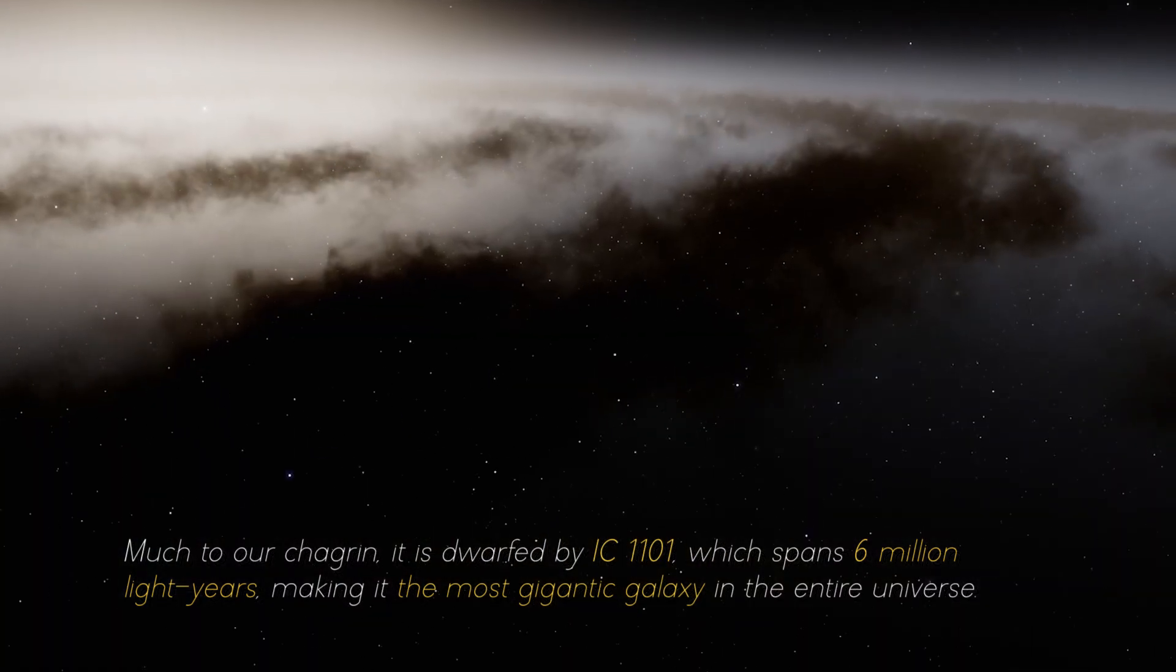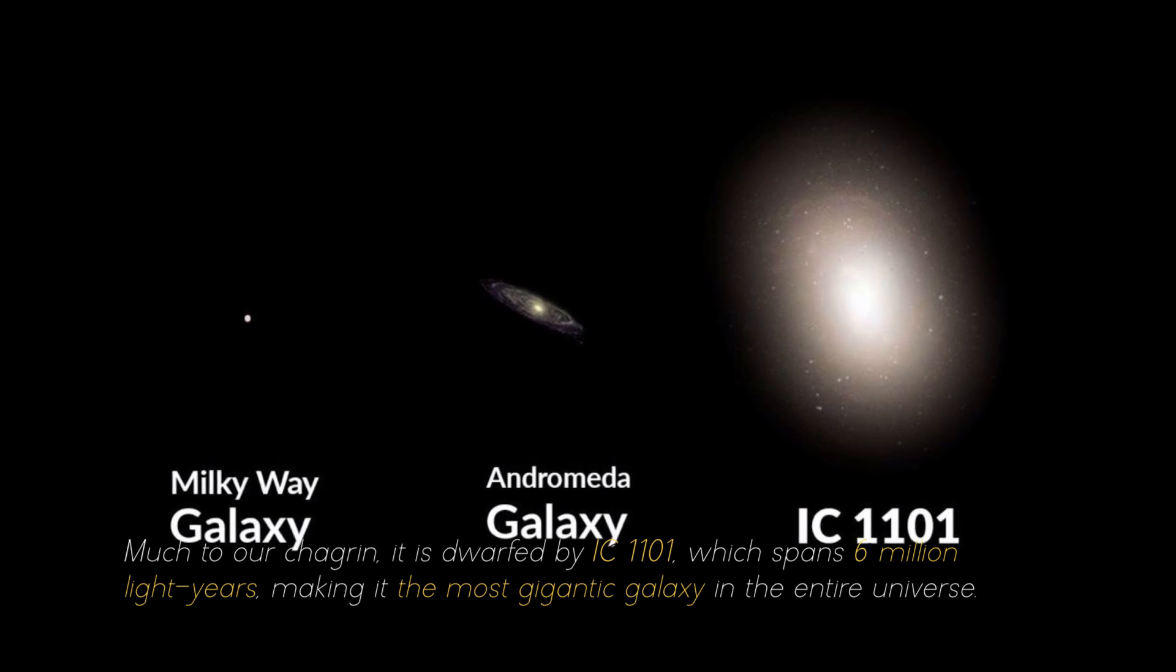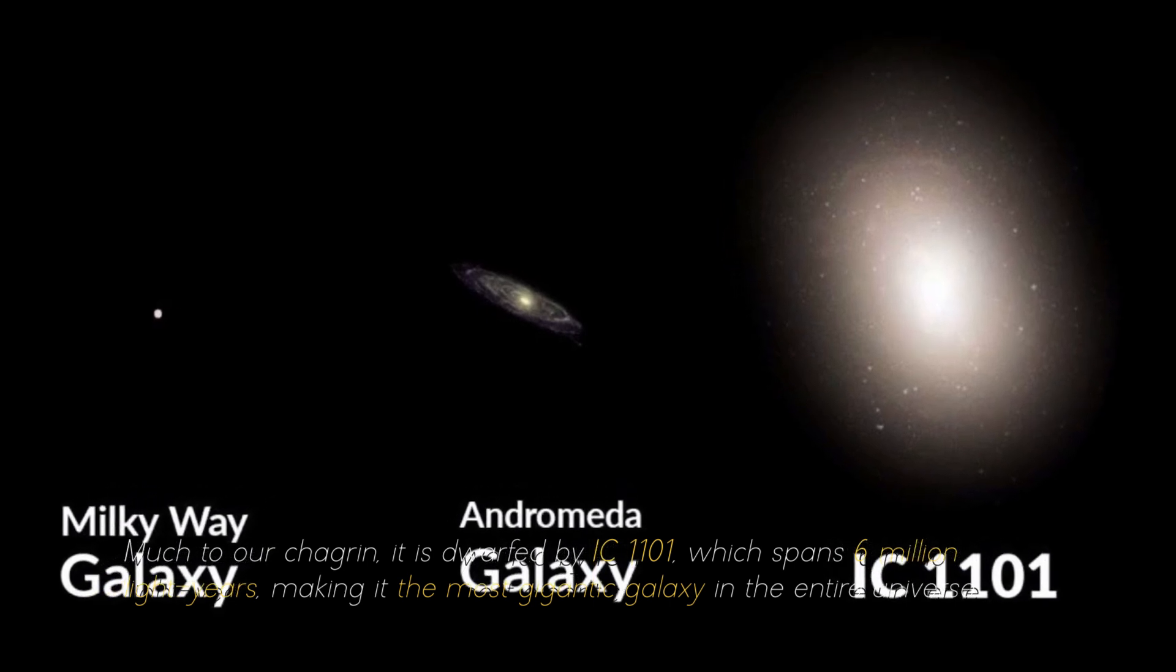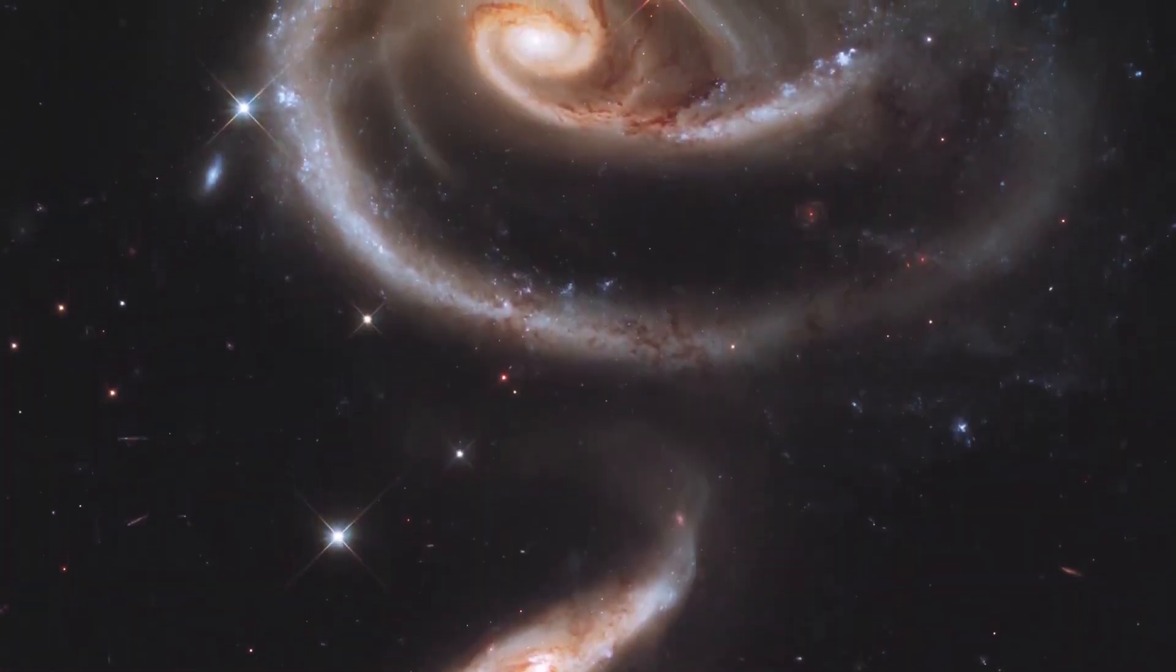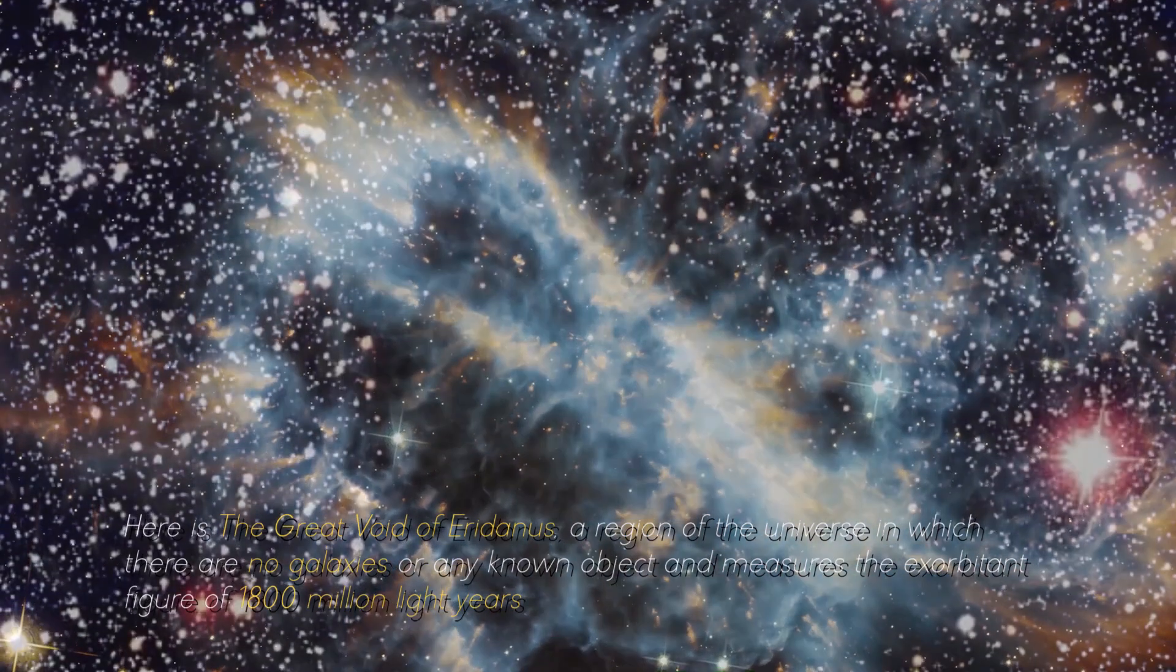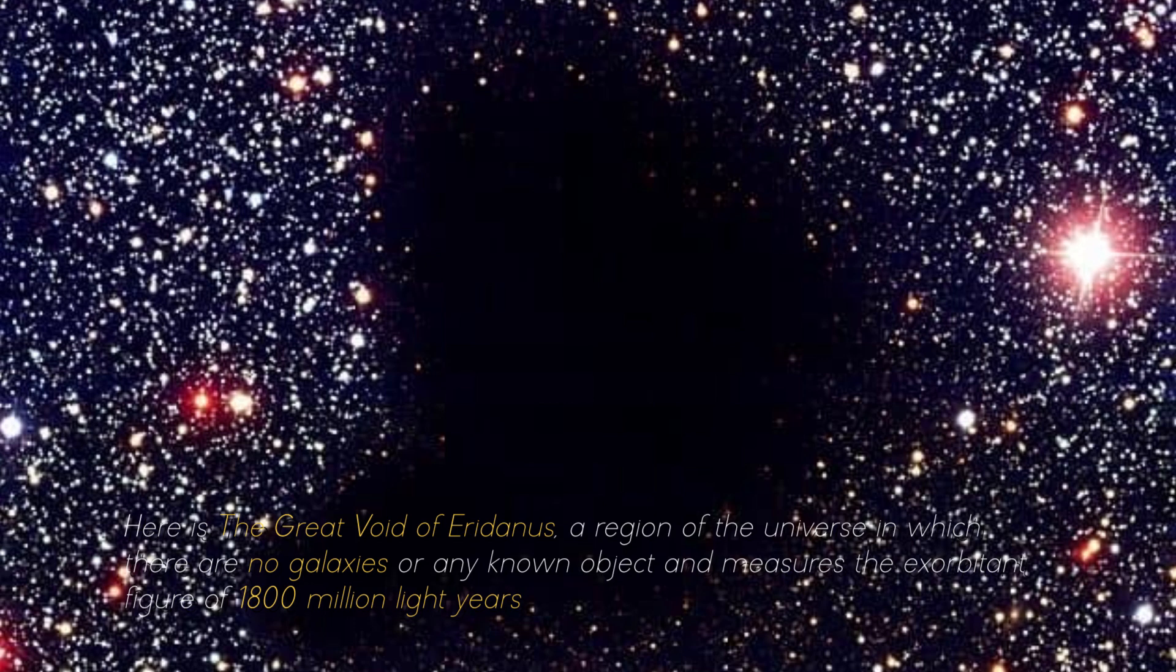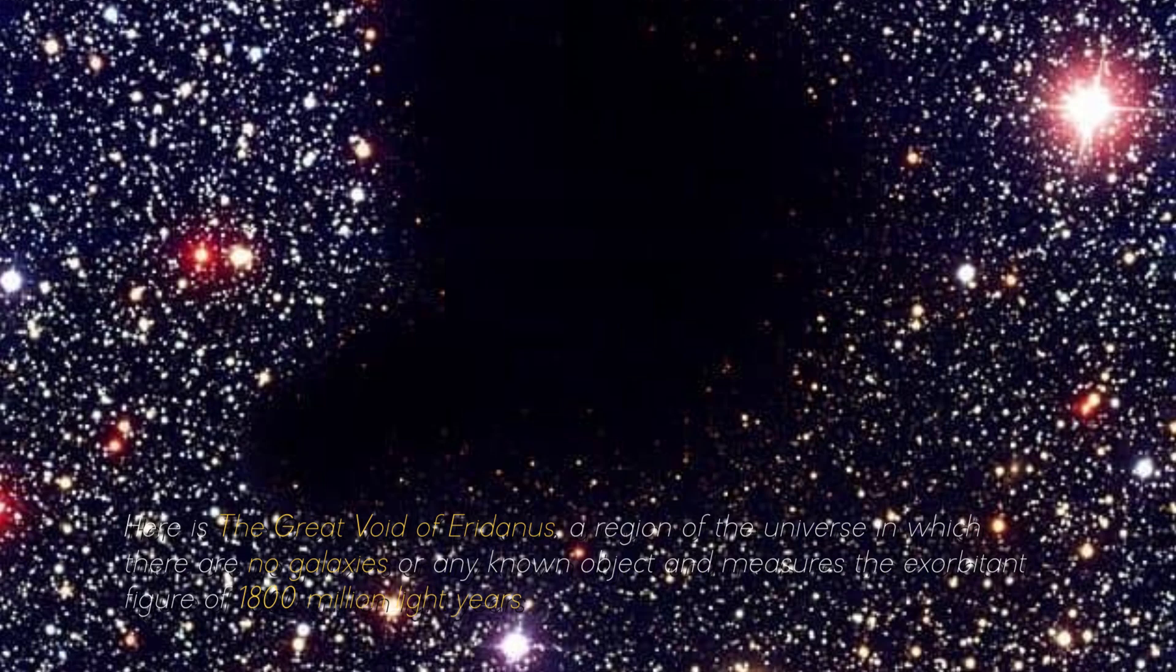Much to our chart range, it is dwarfed by the IC 1101, which spans 6 million light years, making it the most gigantic galaxy in the entire universe. Plunging into the vastness of space, there are even more colossal objects that could degrade the largest galaxy in the cosmos. Here is the Great Void of Eridanias, a region of the universe in which there are no galaxies or any known object, and measures the exorbitant figure of 1,800 million light years.